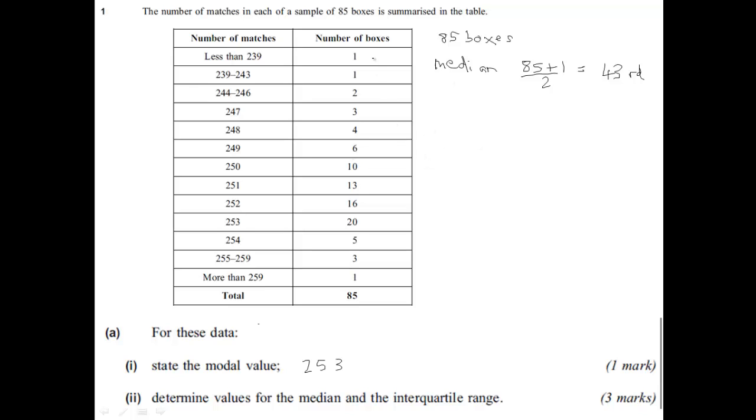Well, where does the 43rd box occur? We have 4, 7, 11 boxes up to here, 17, 27, 40. So we can clearly see here that the median will be in this region. The 43rd box will be there. So for the median we write 252. And we sometimes refer to the median as Q2, don't we? So we'll write that down just to remind ourselves.